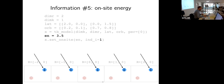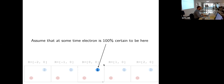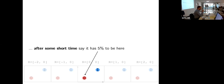Once you specify the on-site energy in the home cell, you've effectively specified it in all unit cells — so with one line you specify all of them at once. But in a solid, if you put an electron in one atom it won't stay there forever. For example, if you prepare the electron to be 100% certain in the blue orbital, after some short time it may move to the red orbital with perhaps only five percent probability there.